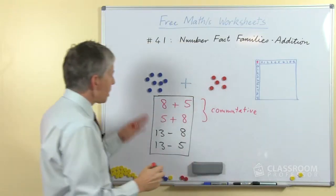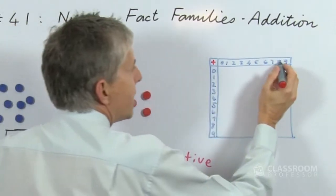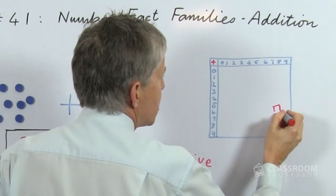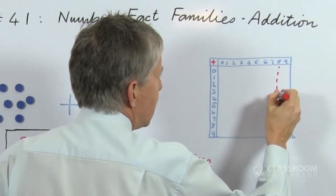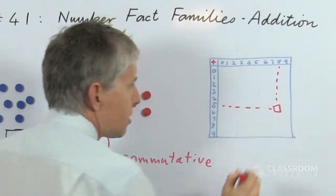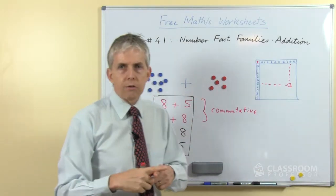If we're looking for 8 plus 5, we can say 8 along the top, 5 down the side, and that will be just there. There will be a 13 there, and so we look at the intersection of the row and the column.